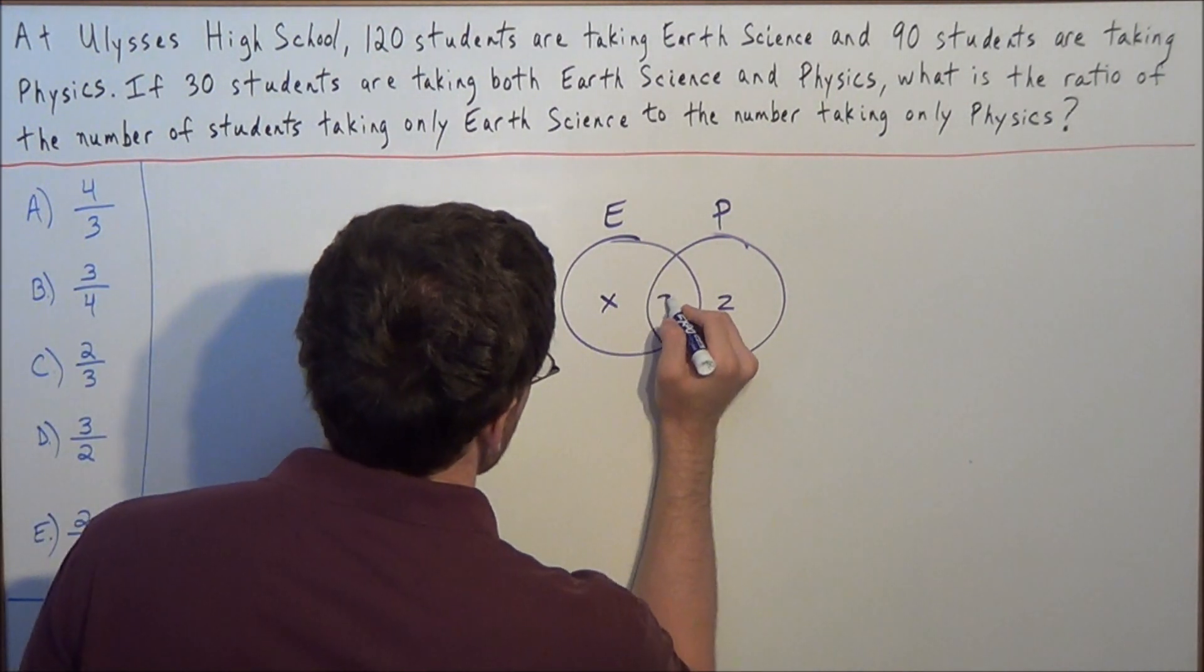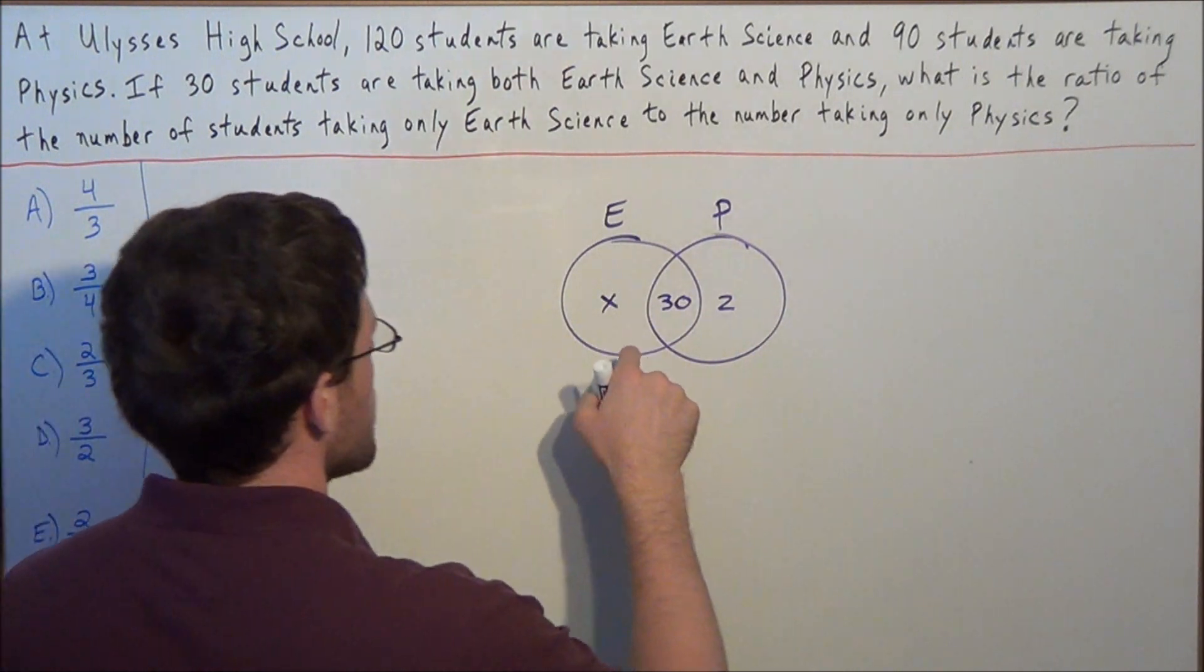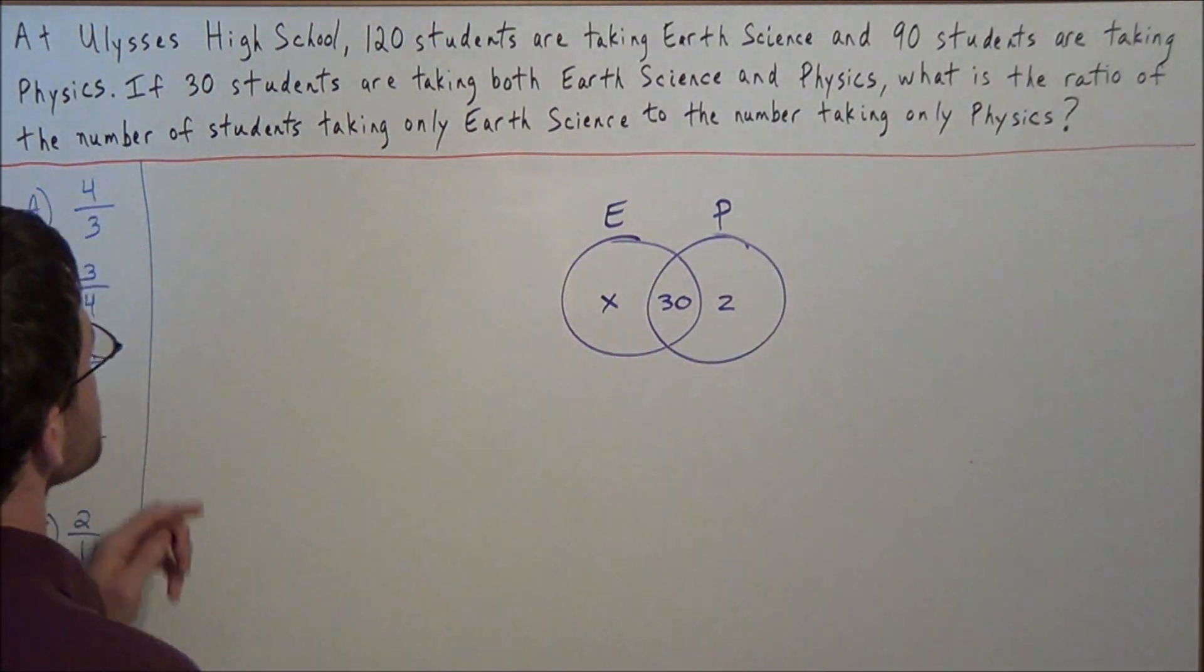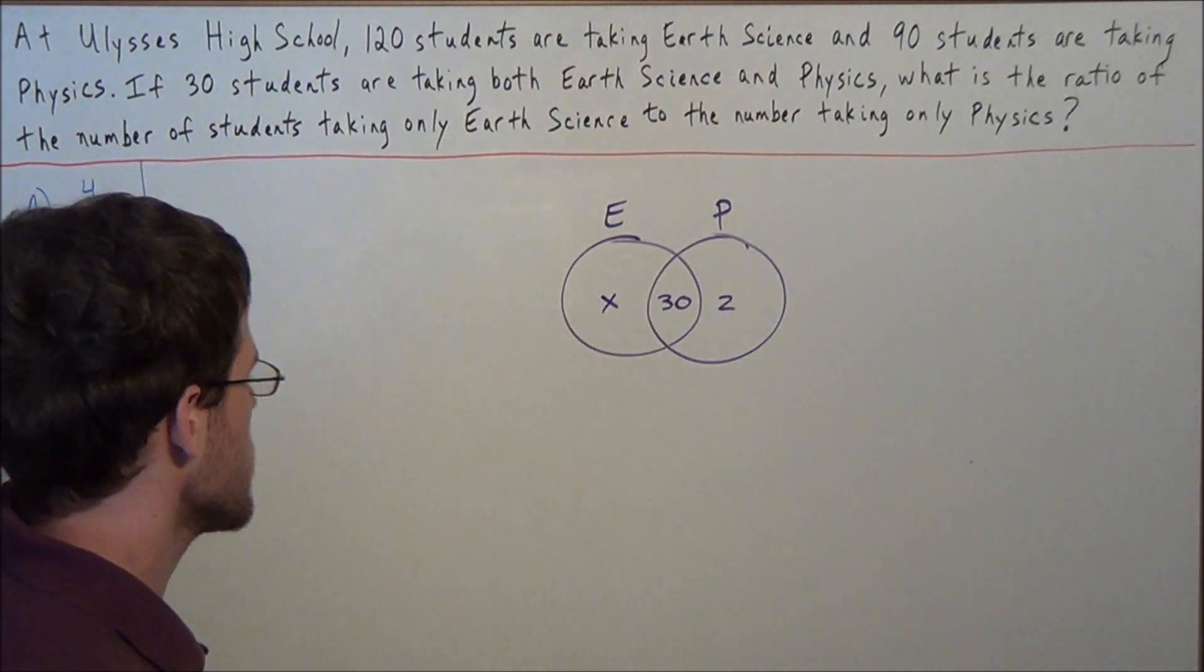So now we can use this information to find the number of students taking only Earth Science and the number of students taking only Physics. So we're given that 120 students are taking Earth Science. So now we can set up the equation X plus 30 equals 120.